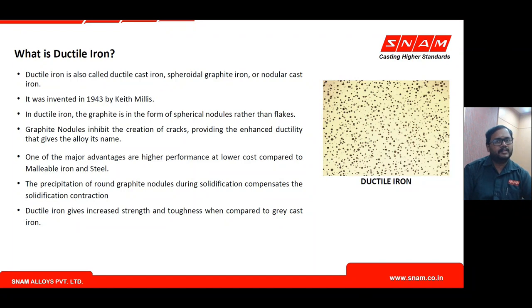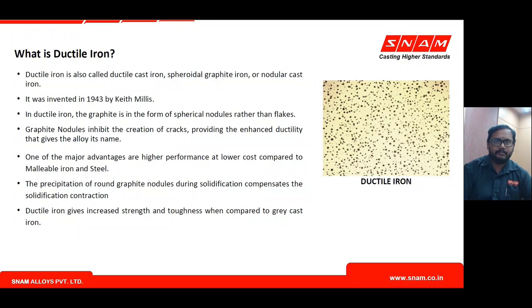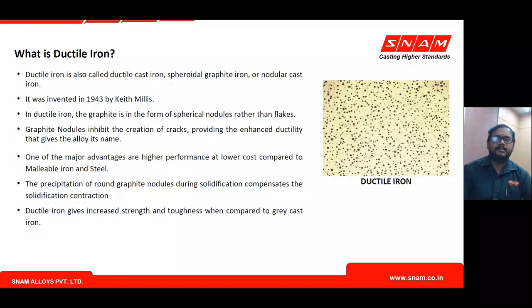The precipitation of graphite in the form of round nodules helps in countering the volumetric contraction happening during solidification, and hence shrinkage-type defects will get avoided or eliminated by graphite precipitation and growth.